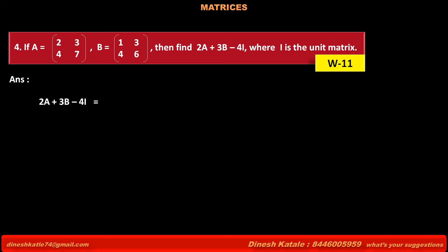This is equal to 2 into matrix A (2, 3, 4, 7) plus 3 into matrix B (1, 3, 4, 6) minus 4 into identity matrix I (1, 0, 0, 1).